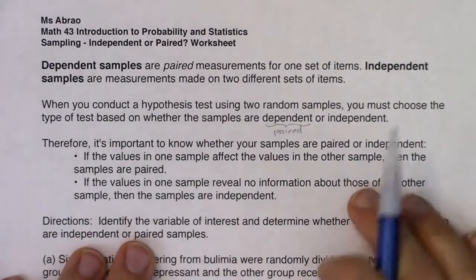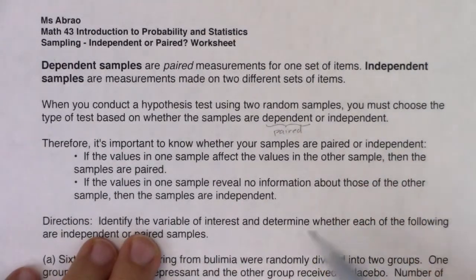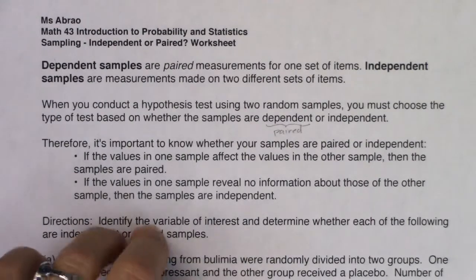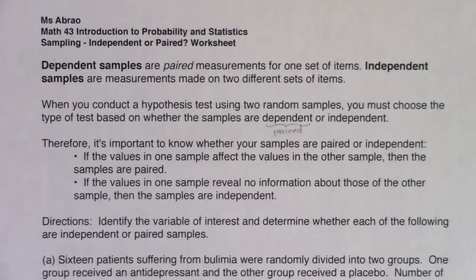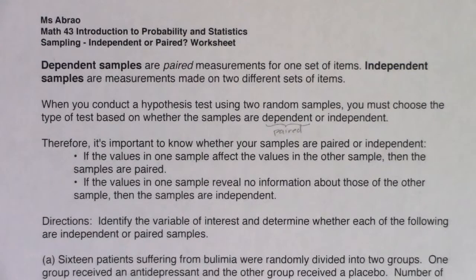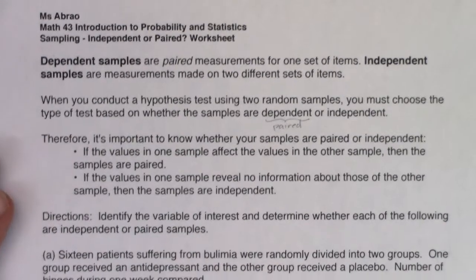For all of these setups, we're going to identify the variable of interest. We should start with what is the variable of this problem — if it's numerical, we're in mean land; if it's categorical, we're in proportion land. Then we determine whether the samples are independent or paired. Let's look at the first setup and listen for what the variable is.